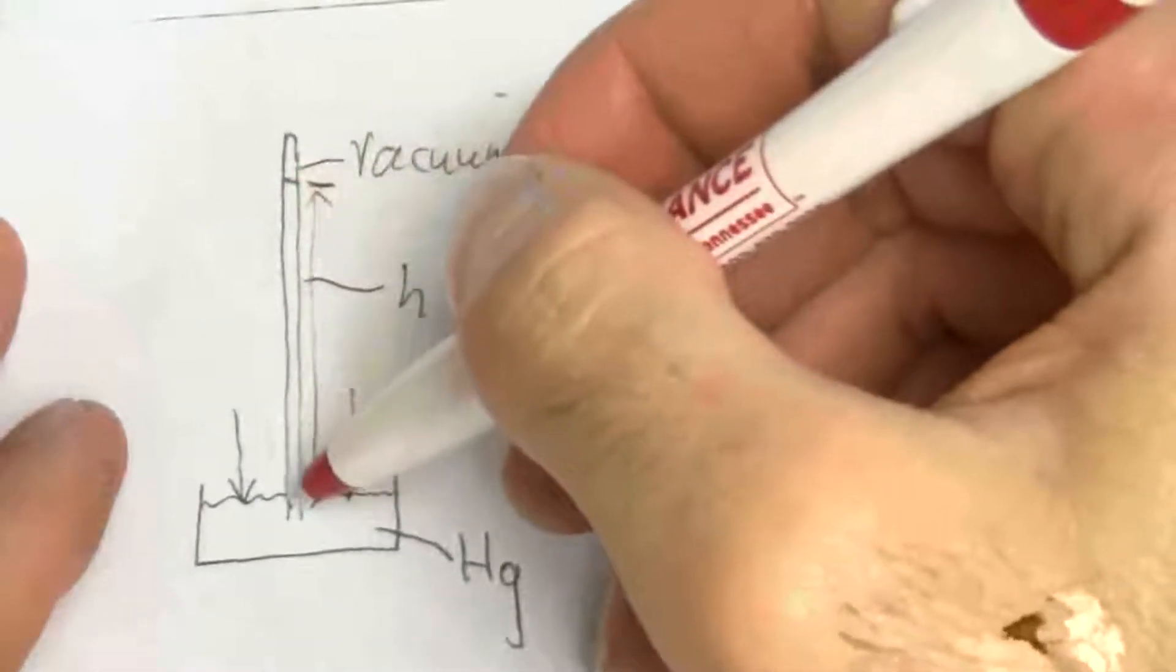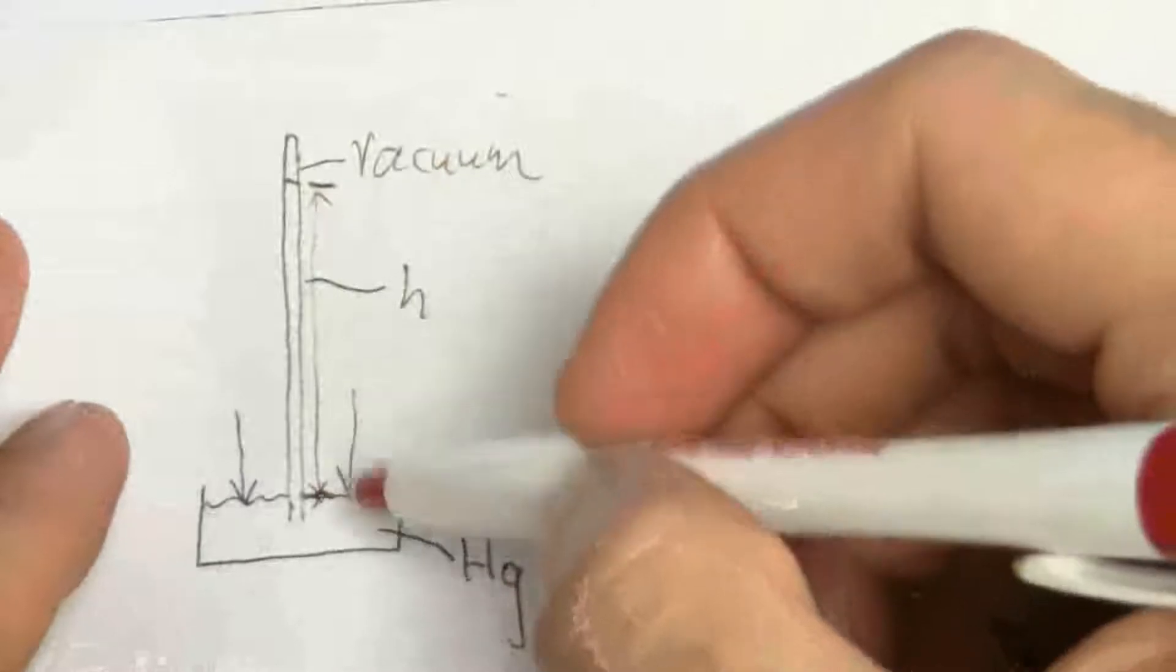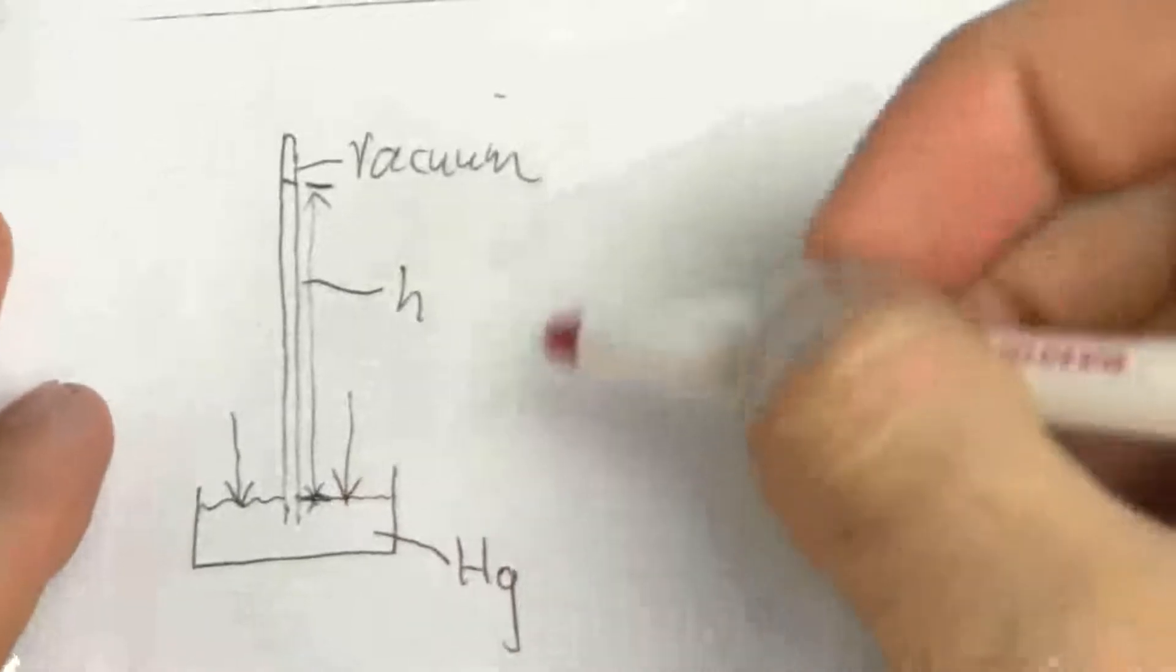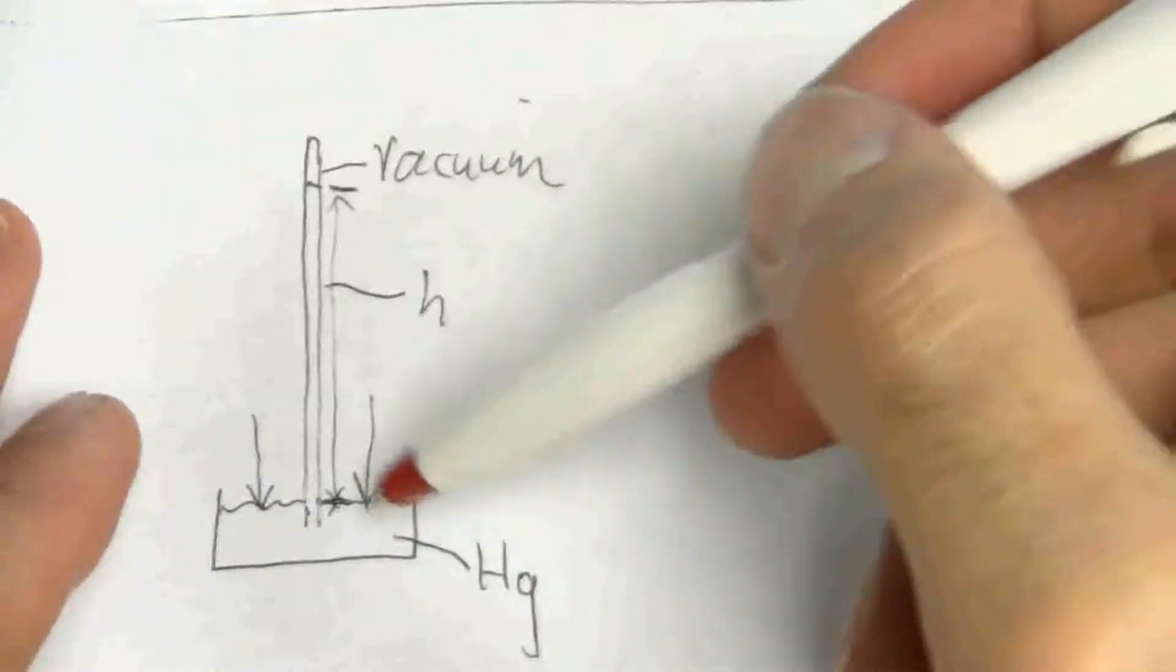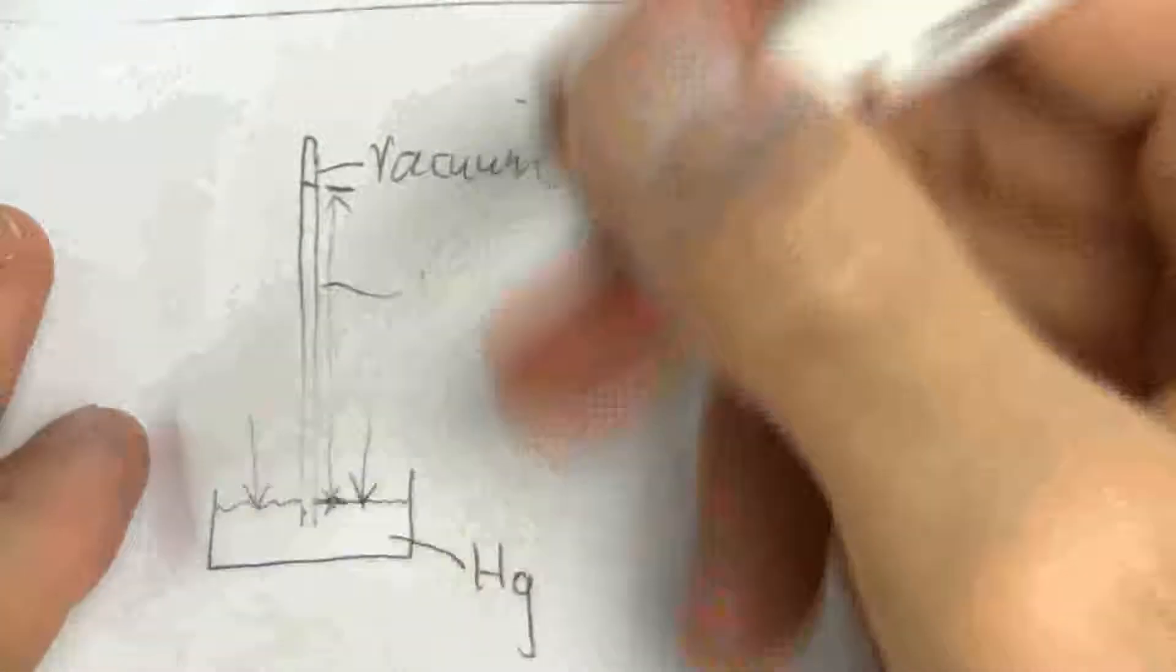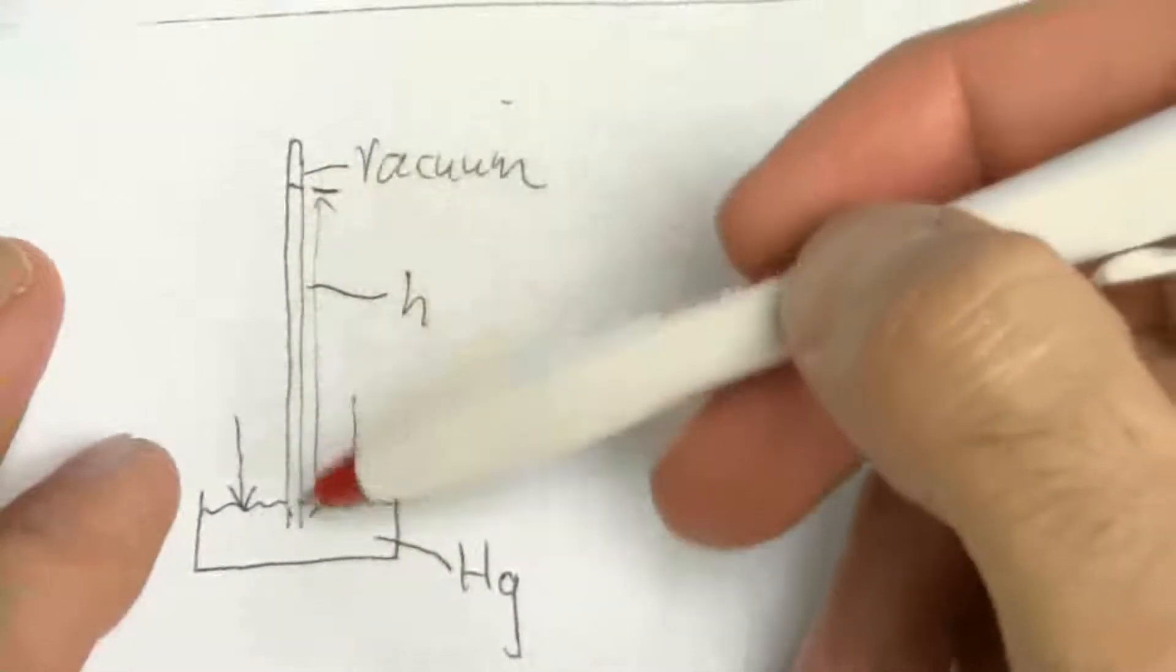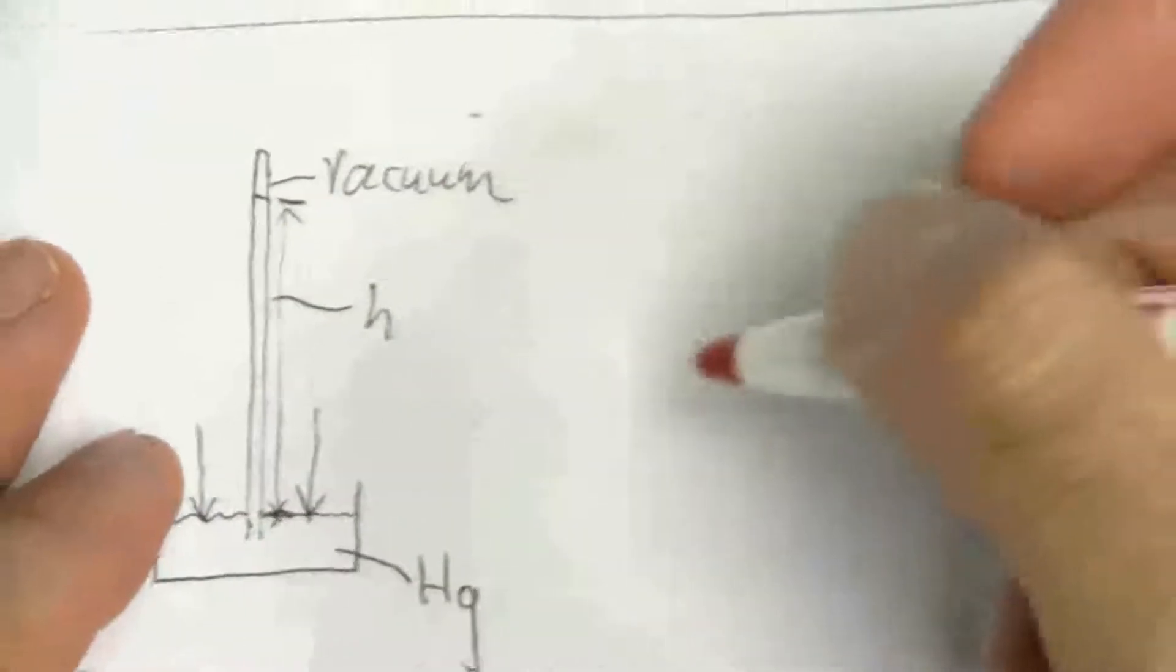And that will give us a weight that will exactly compensate for the pressure. The force exerted by the molecules of air pushing down will be exactly compensated by that mass of mercury in the column.